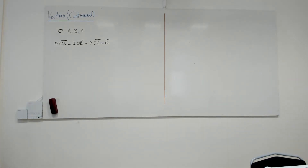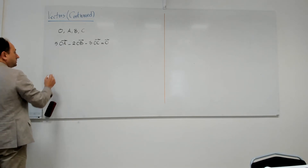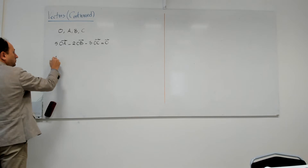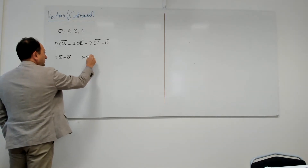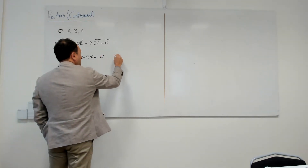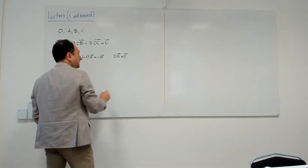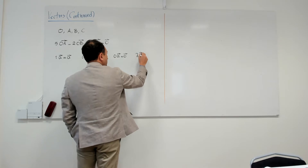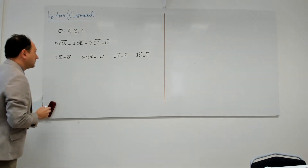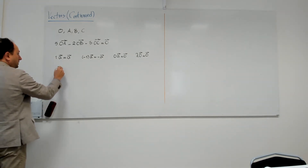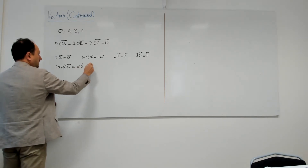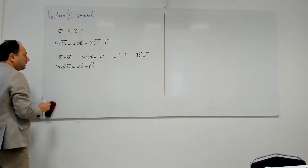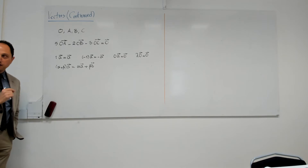Let me go through it patiently. First, let me remind you of the properties of scalar multiplication. Multiplying one by any vector gives the same vector. Multiplying minus one gives the negative of the vector. Multiplying zero by any vector gives the zero vector. Multiplying any lambda by the zero vector also gives the zero vector. If I have two numbers alpha and beta, I can add them first and then multiply by a vector, or multiply each separately and add the results.